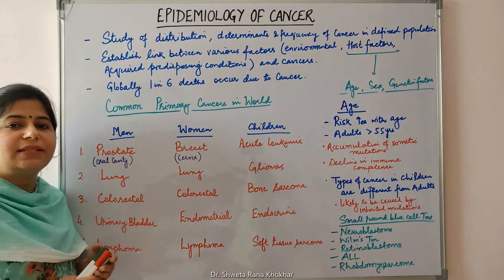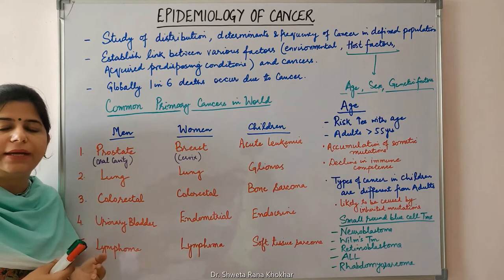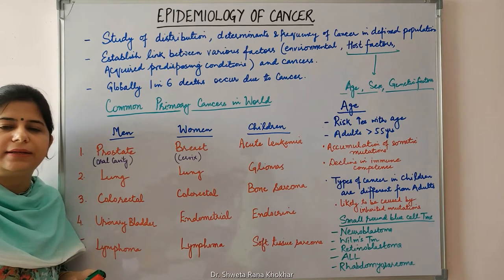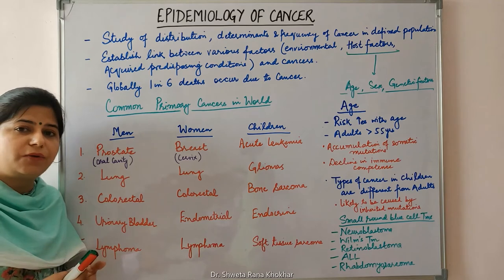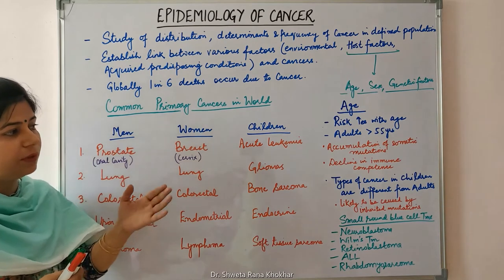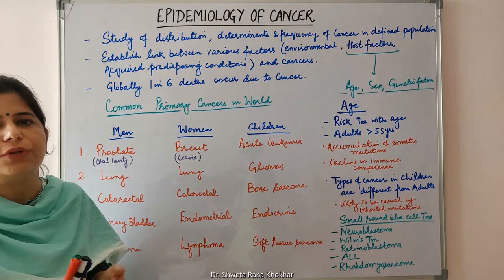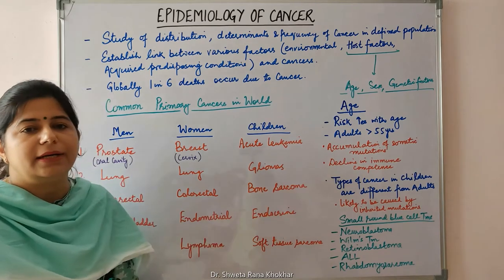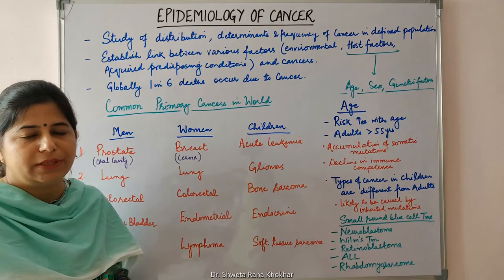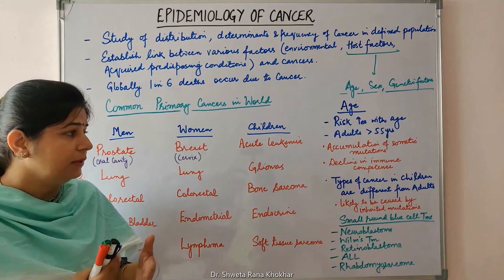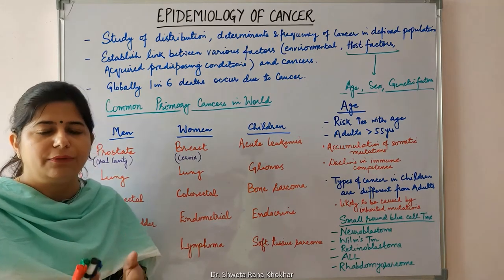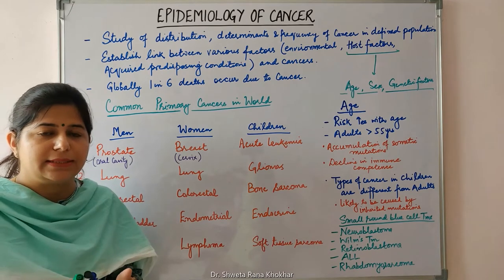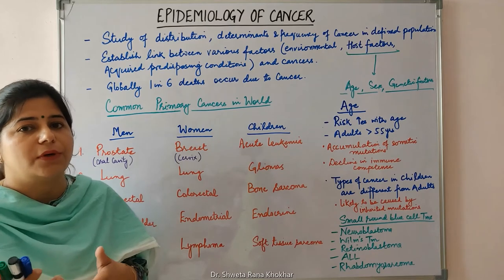Regarding age, cancer can occur at any age — in adults, infancy, and childhood — but it is more commonly seen in adults over 55 years of age, and the risk of cancer increases with age. This can be because of accumulation of somatic mutations associated with aging of cells, and also due to decline in immune competence seen in older age groups. The immune response plays a protective role against cancer development, so in immune deficiency states we see various types of cancers.